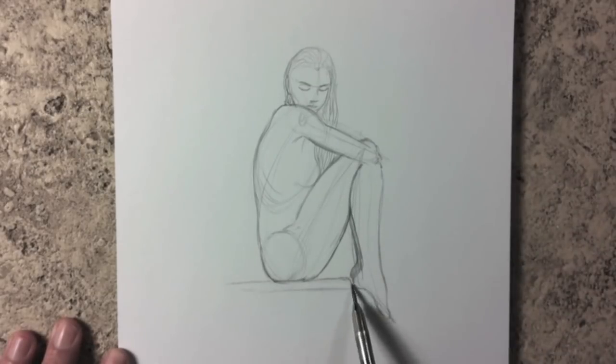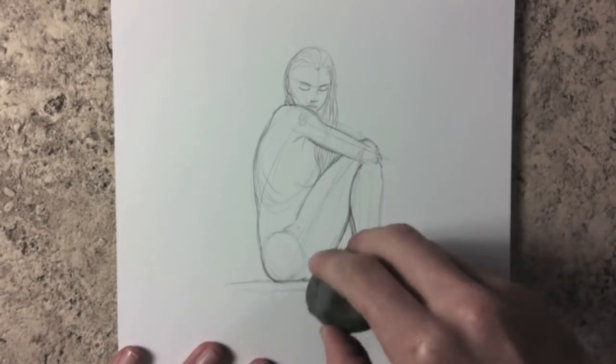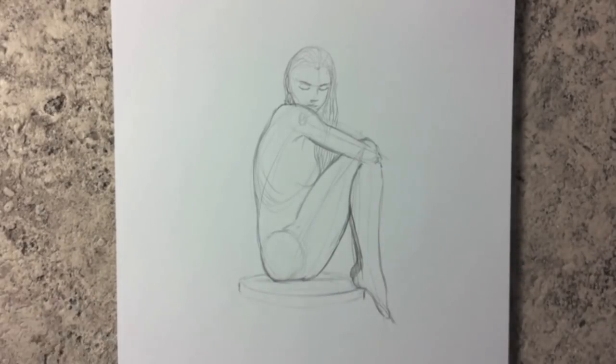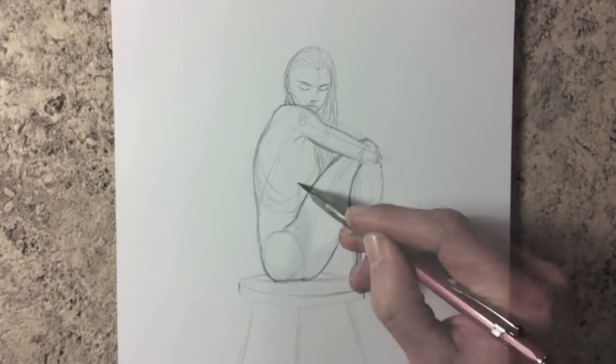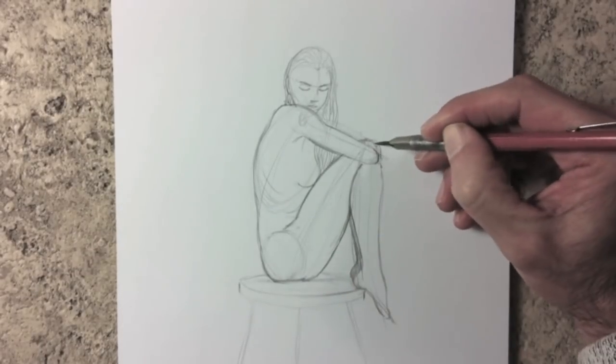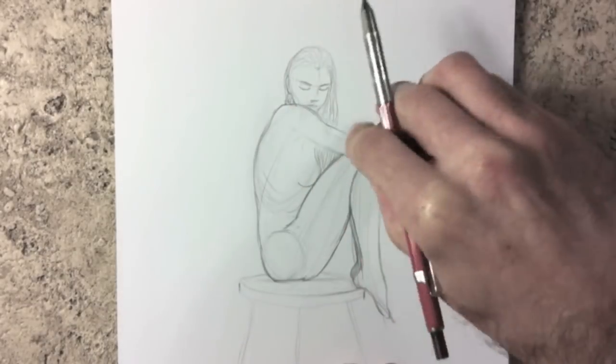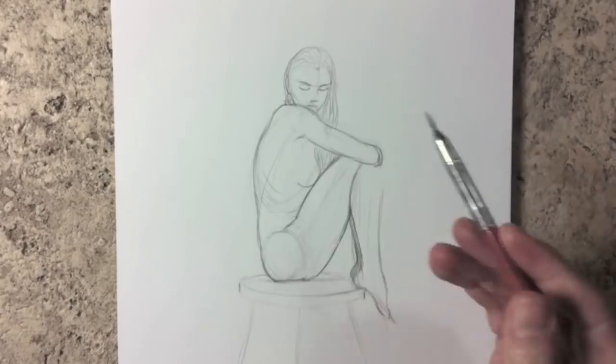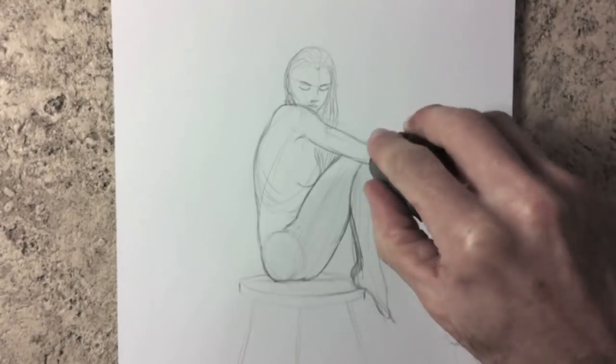Let's sit her on a stool, but wait, the feet should be on the stool as well. I want the arm to go around the knee, so it should be more like this and the leg should be more toward her.